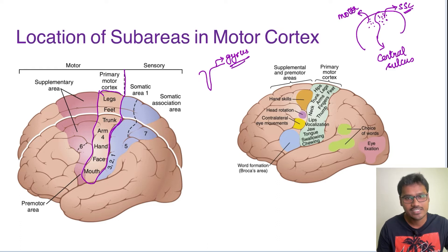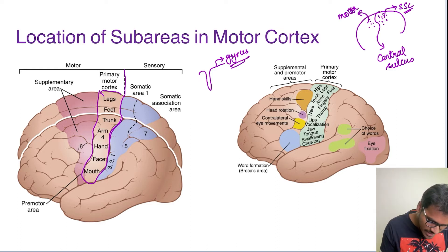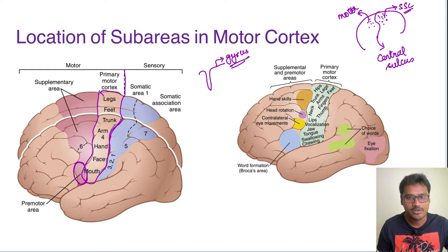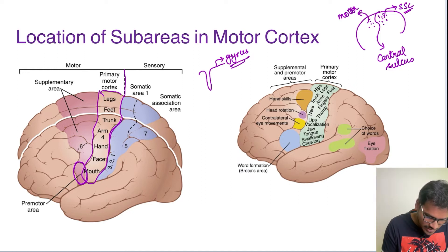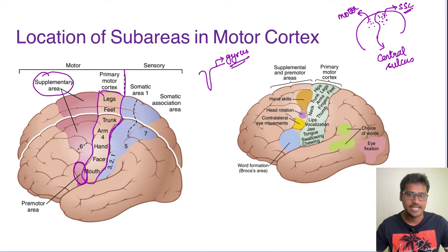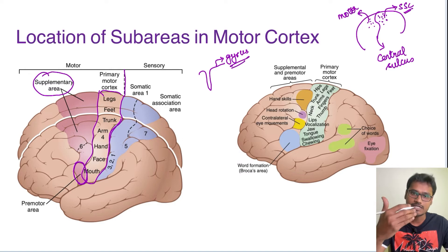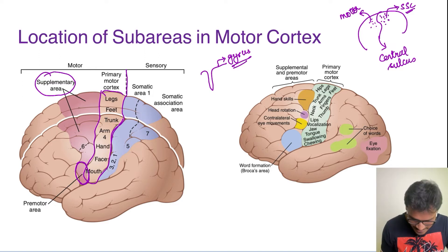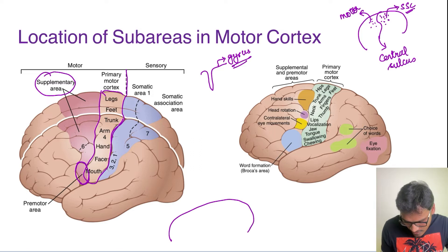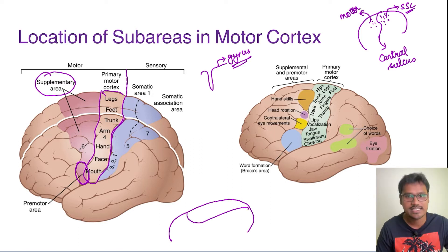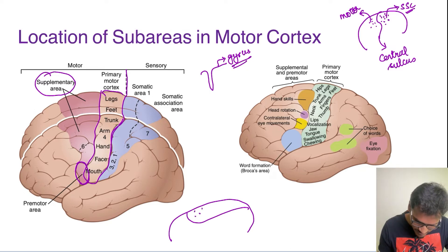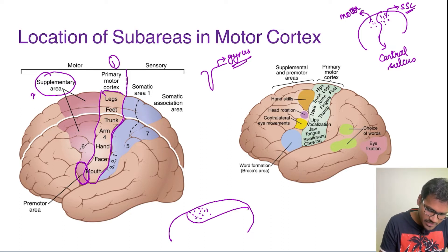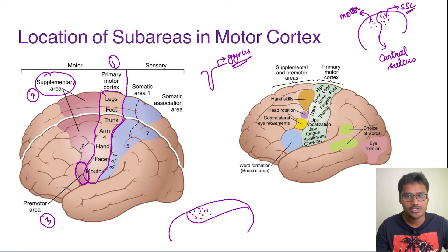The premotor area is located just in front of the primary motor cortex. The supplementary area is located more on the medial side of the brain. On the medial surface there is a sulcus called the cingulate sulcus, and just above the cingulate sulcus we have our supplementary area. These three — the primary motor cortex, supplementary area, and premotor area — are the major components of the motor cortex.